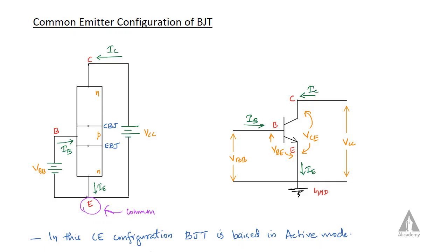The transistor has three regions: the emitter region, the base region, and the collector region. In between these three regions we have two junctions — the first one is the collector-base junction and the second one is the emitter-base junction.